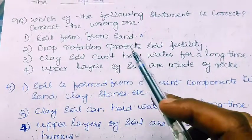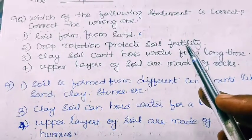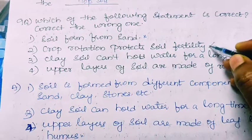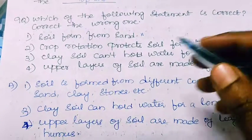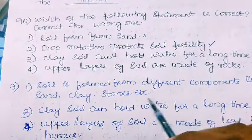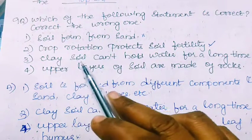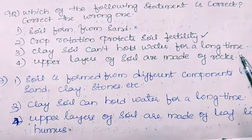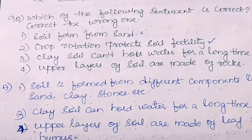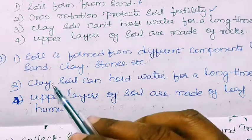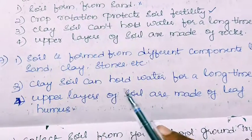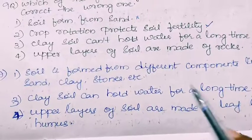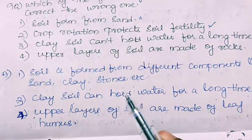Second statement: Crop rotation protects soil fertility. This is a correct statement, so no explanation is needed. Third statement: Clay soil can't hold water for a long time. This is a wrong statement. Clay soil can hold water for a long time because of its small pore size.